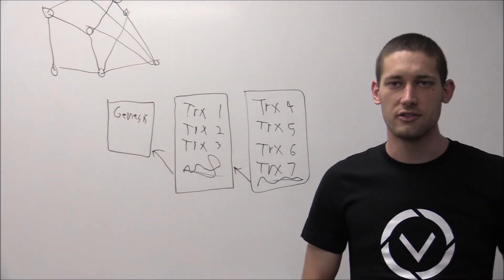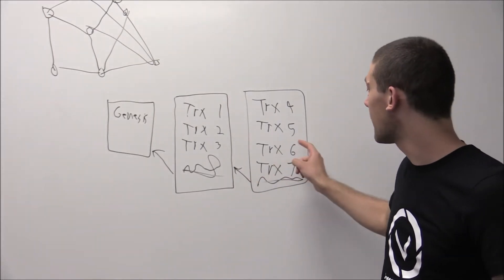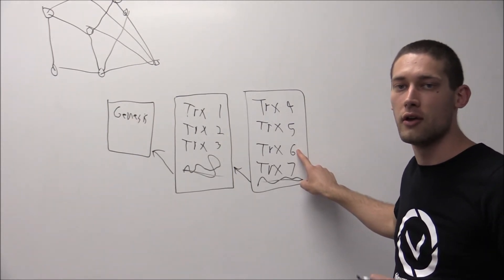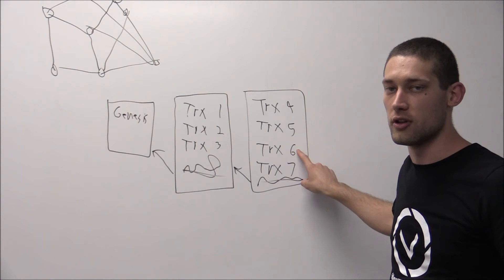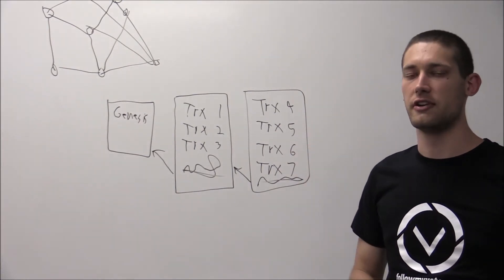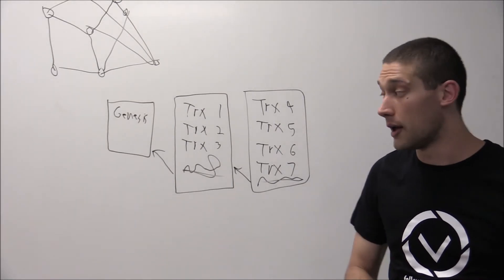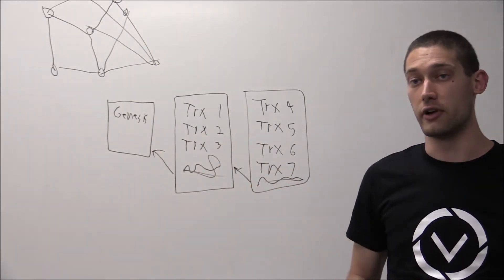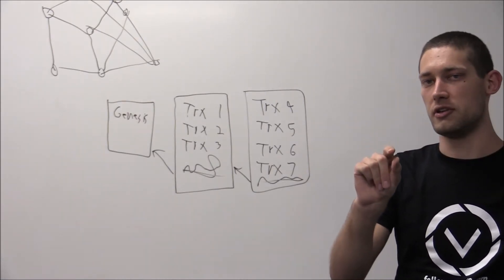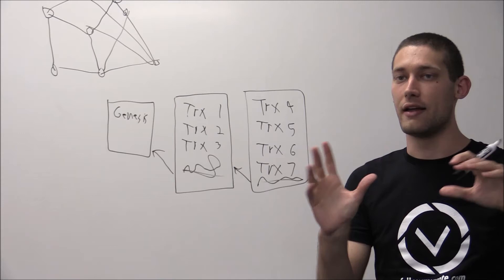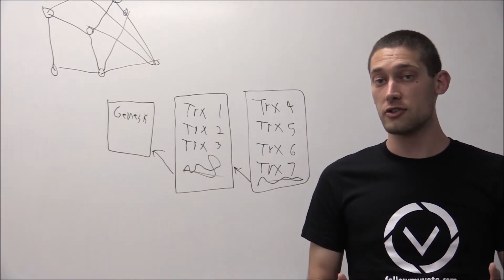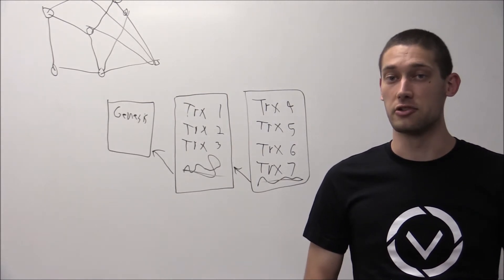For instance, we can allow people to broadcast a new transaction after their first one that published a decision on an election. They can broadcast a new one which changes their decision on the election. And because we have the entire history, we can tell that the old decision is now invalid and the new decision is to be counted instead. Which means that they can change their vote as new information comes to light.